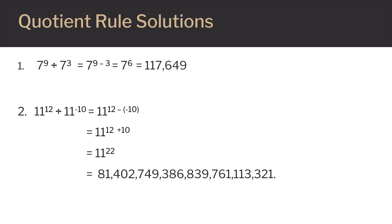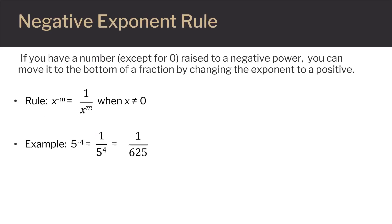The third rule we'll cover is the negative exponent rule. It says that if you have a number — except for zero — raised to a negative power, you can move it to the bottom of a fraction by changing the exponent to a positive. In other words, if you have x to the negative m power, you can rewrite it as one over x to the positive m power. In this example, five to the negative fourth power can be rewritten as one over five to the positive fourth power.